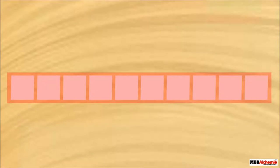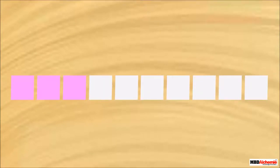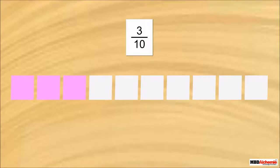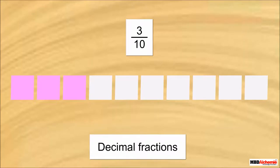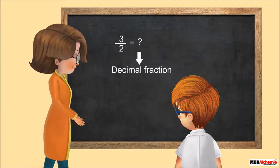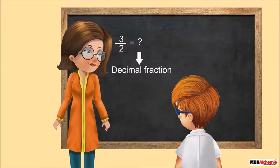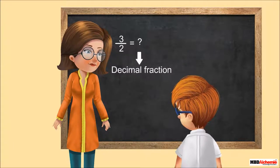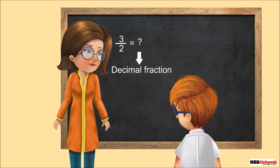These are 10 pieces. If I shade 3 out of these 10 pieces, then it will be 3 out of 10, that means 3 by 10. It is a proper fraction, but how to write it as a decimal fraction? Neil appears, confused about converting a fraction into a decimal fraction.